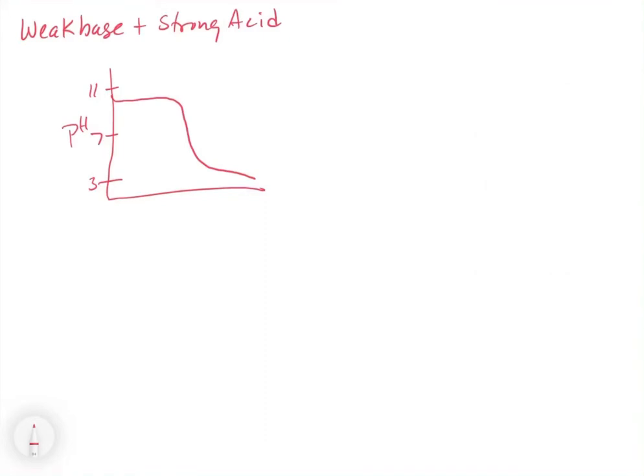In this video we're going to look at a slightly different case where we have a weak base reacting with a strong acid. The example here would be if we had ammonia aqueous plus HCl aqueous gives NH4+ aqueous plus Cl- aqueous.